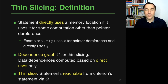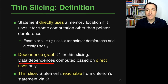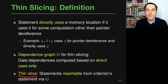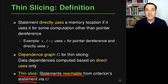Based on this idea of direct uses, thin slicing computes a dependency graph similar to the previous approach, but now it only contains data dependencies — no control flow dependencies — and it also only considers those data flow dependencies that correspond to a direct use as defined above. Given this dependency graph, the rest of the approach is the same as the original Mark Weiser approach: the thin slice is computed as all statements reachable from the criterion statement in this graph, just with a less dense graph than classical static slicing.